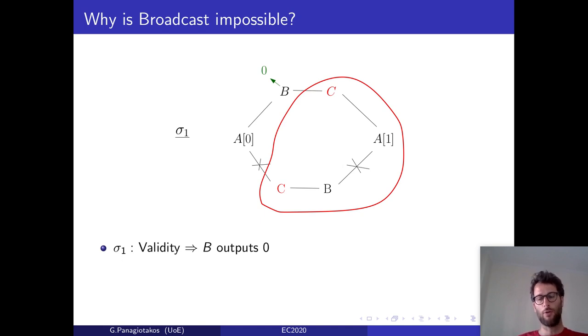In the first scenario, party C is corrupt. It drops all communications with party A, while in the eyes of B, it acts as if A was broadcasting 1. Now, in reality, in this scenario, A is broadcasting 0, and thus, by validity, since A is honest, B should output 0.